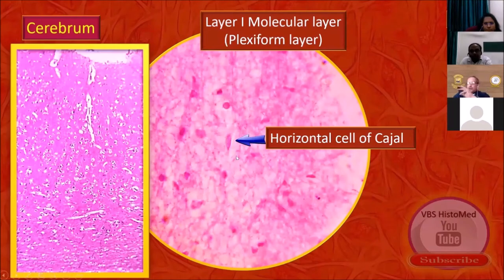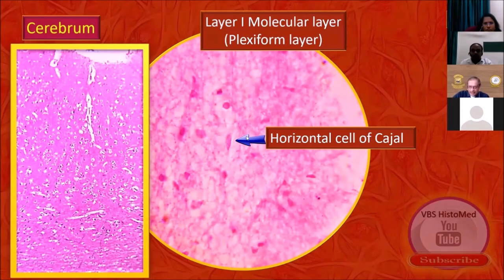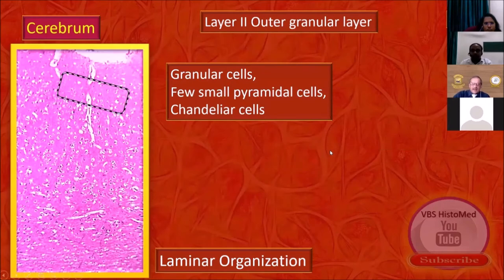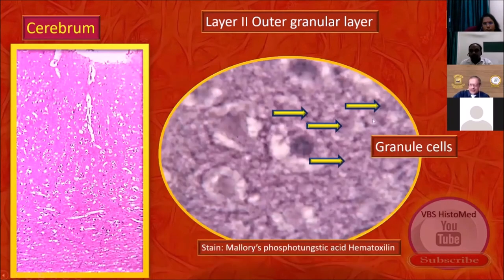You would have routinely seen the cerebrum with pyramidal cells. But you can see the horizontal cells of Cajal highlighted here — that is a horizontal cell in layer one. Now, granular cells and pyramidal cells — one or two granule cells can be seen. They are called granular because they are very small cells; the nucleus is large and the cytoplasm is correspondingly low, so it looks like spots rather than cells.